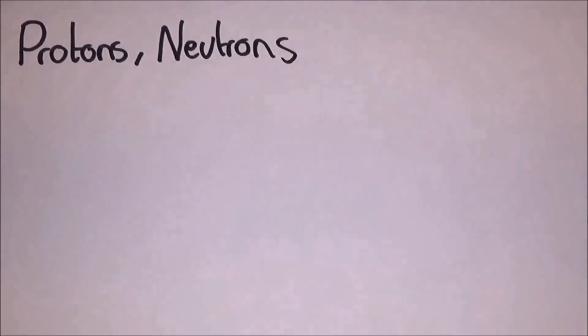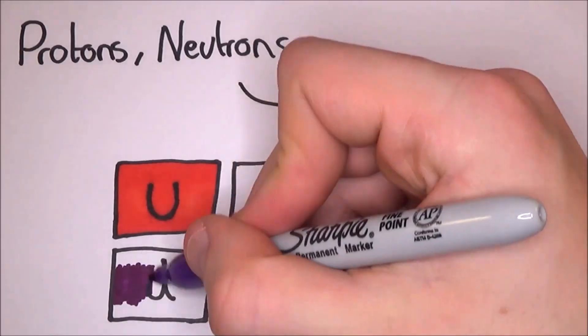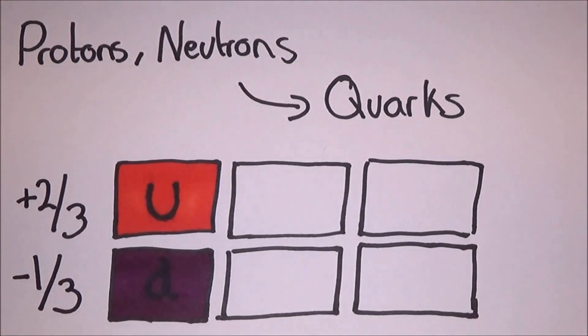Now forget everything I just said because protons and neutrons are made up of quarks, and quarks are one of three major groups known as elementary particles. Just like leptons, there are six types or flavors of quarks. Half are known as up-type quarks, which all have a positive charge, and the other half are known as down-type quarks, which all have a negative charge. The first generation quarks are up and down.